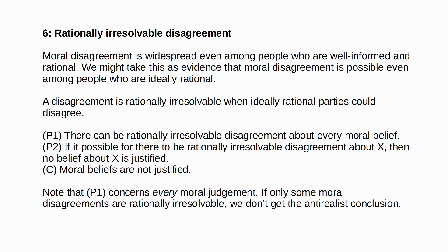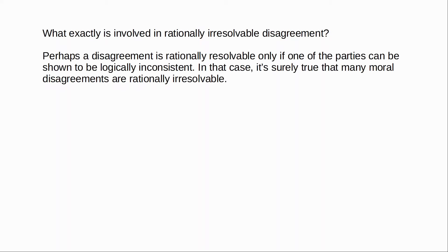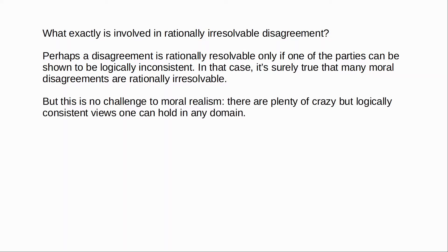Is this argument convincing? Well, the key question, as Enoch says, is what exactly is involved in a rationally irresolvable disagreement. One way to interpret this is to say that a disagreement is rationally resolvable only if one of the parties can be shown to be logically inconsistent — so a rationally irresolvable disagreement occurs when both positions can be held without logical inconsistency. On this interpretation it's pretty plausible that moral disagreements are rationally irresolvable, since there are plenty of controversial moral positions that are not in themselves logically inconsistent. The trouble is that this doesn't really seem to be a challenge to realism anymore, because there are plenty of crazy but logically consistent views you could hold in just about any area of science and philosophy. Flat earthers are crazy, but it's possible to be a flat earther without logical inconsistency.